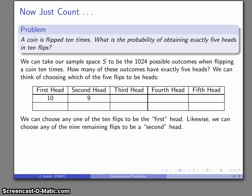Then eight, then seven, and six. So here are the permutations that represent the ways that I can choose first flip to be head, second flip to be head, third flip to be head, and so on.